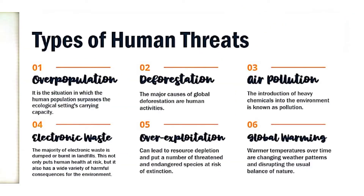Types of Human Threats: 1. Overpopulation - it is the situation in which the human population surpasses the ecological setting's carrying capacity. 2. Deforestation - the major causes of global deforestation are human activities. 3. Air Pollution - the introduction of heavy chemicals into the environment is known as pollution. 4. Electronic Waste - the majority of electronic waste is dumped or burned in landfills.